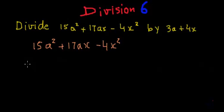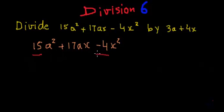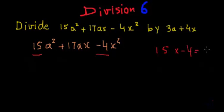So now let's recall the method of factorization. In factorization, if we have an expression with three terms, we take the coefficient of the first term — which is 15 — and the coefficient of the last term — which is minus 4 — multiply them, and find the factors of that product. So 15 multiplied by minus 4 is minus 60.